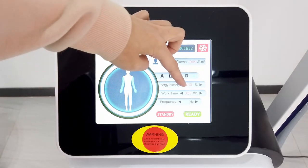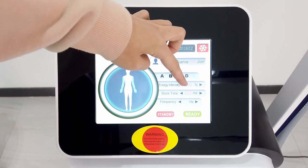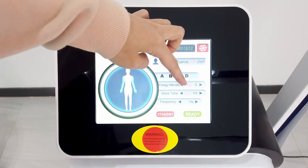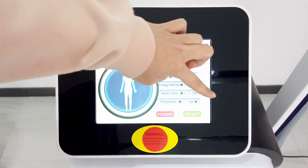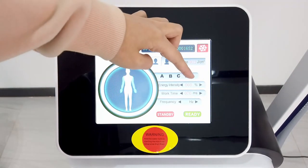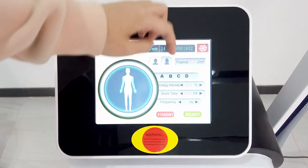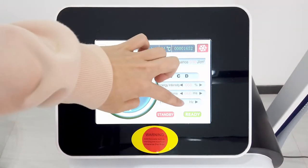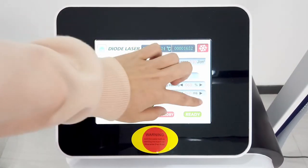This one we can set based on the color of the skin. If the skin color is light, we can set it to 70. If the skin color is dark, we can set it to 60. And the frequency, you can set to 3 or 4.